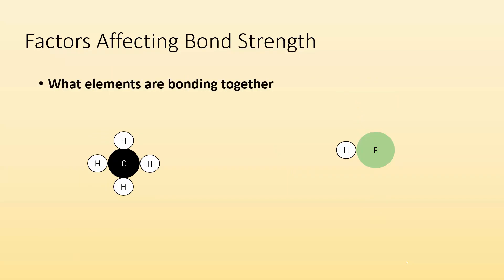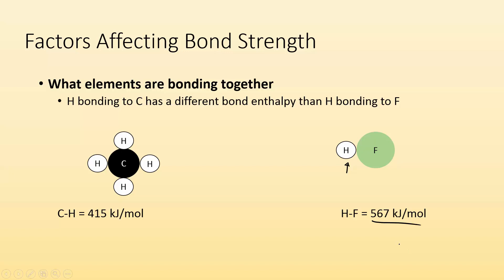Factors affecting bond strength. Well, what elements are bonding together determines, it's like the number one go to question. What's it bonded to if we want to talk about bond strength? So hydrogen being bonded to carbon has a different bond enthalpy than hydrogen bonding to a fluorine. So you can see right here, carbon hydrogen bond enthalpy is roughly 415 kilojoules per mole. And if I take a look at HF, how much is that bond? That's still hydrogen, but it's bonded to something else and we have a different bond enthalpy. So first factor that's going to affect bond strength is what atoms are bonding to each other.